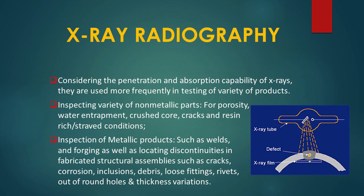X-rays are generated when high-speed electrons interact with matter. X-ray radiography is used to inspect a variety of non-metallic parts for porosity, water entrapment, crushed core, cracks, and resin-rich or starved conditions. It is also used for other classes of metallic products such as welds, castings, and forgings, as well as for locating discontinuities in fabricated structural assemblies such as cracks, corrosion, and other variations.